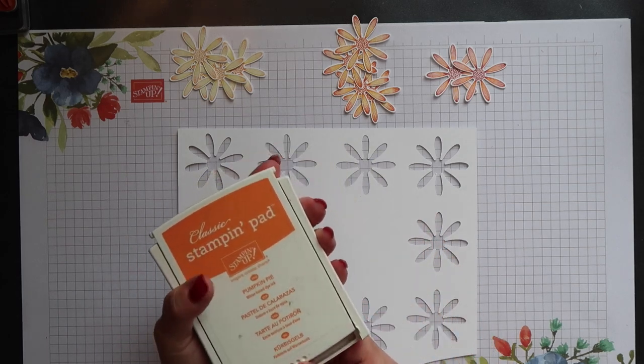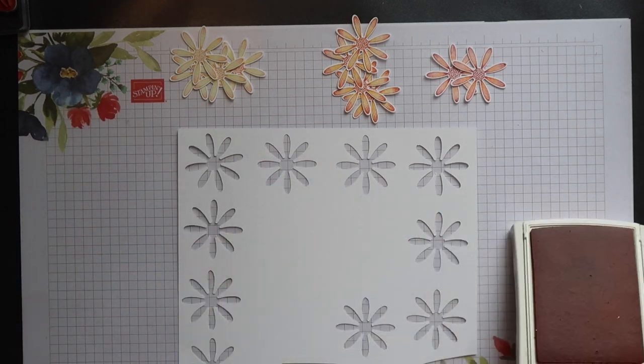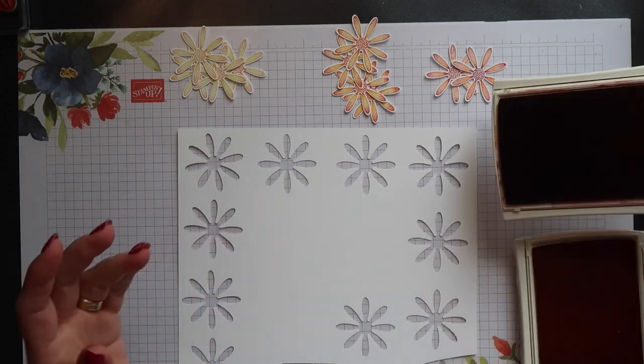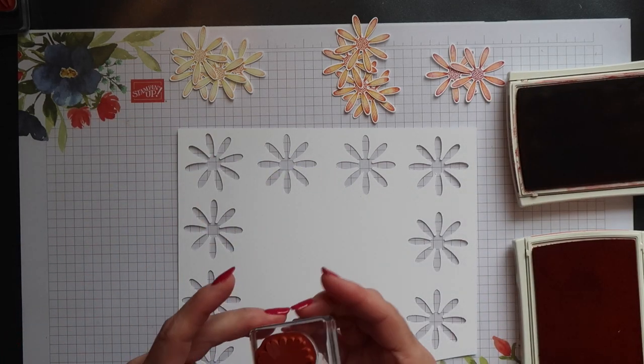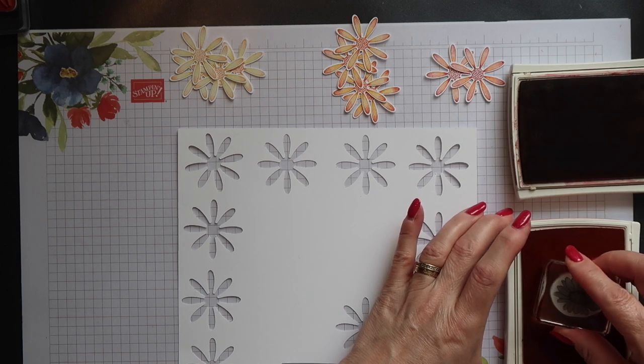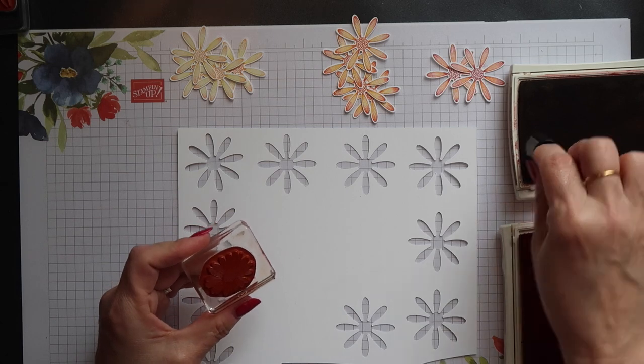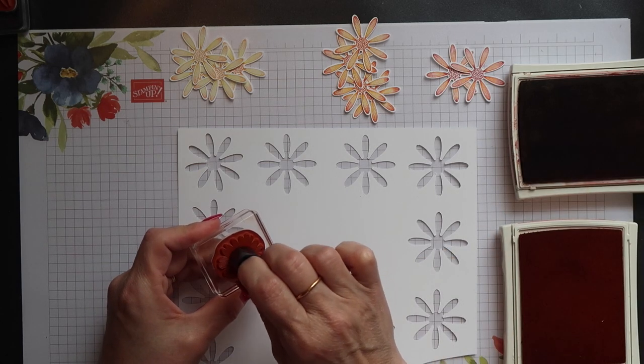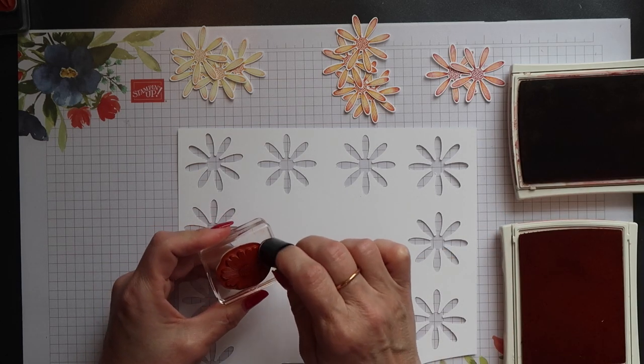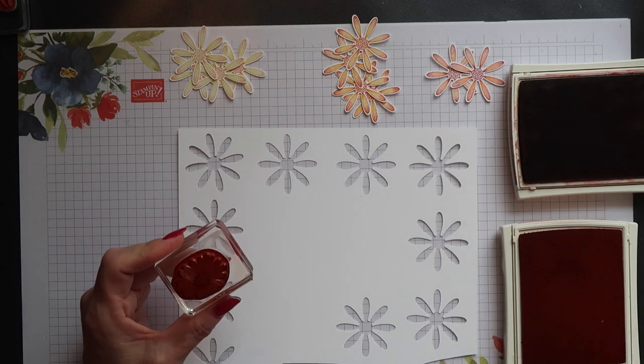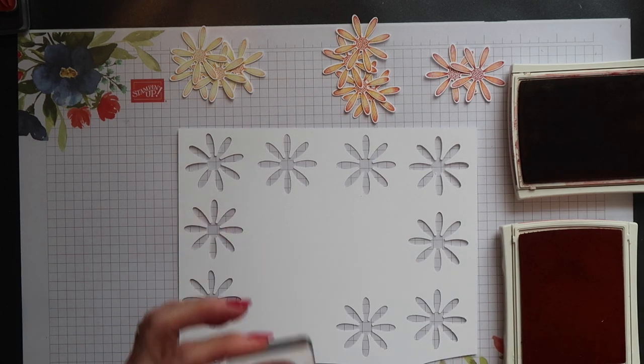For this one we're going to start with Pumpkin Pie, and then we're going to add Cherry Cobbler as the second tone. As with the Medium Daisy we did earlier, I'm going to cover it initially with Pumpkin Pie, and then using a Sponge Dauber I'm going to add some Cherry Cobbler in the centre and around the edges of the petals, before stamping the image.